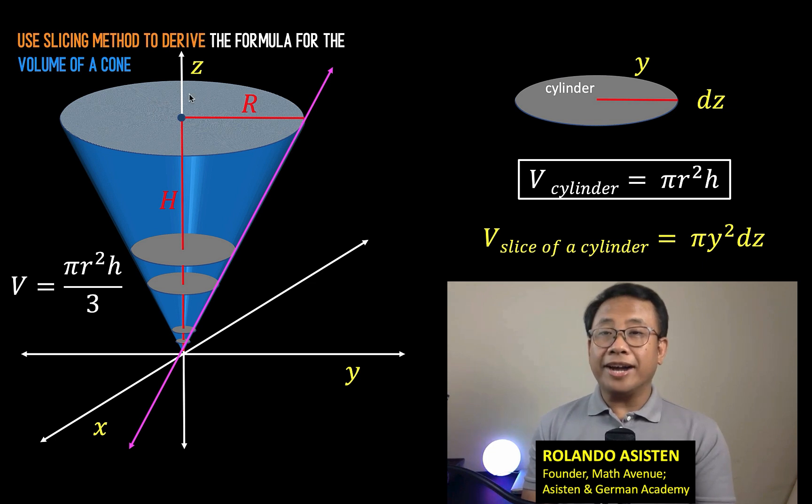So what is the equation of this pink line? The two variables involved here are z and y. The equation is z equals the slope of this pink line. The rise is H and the run is R, so H over R times y. And solving for y, we have y equals R over H times z. And we can now replace this y by this expression.